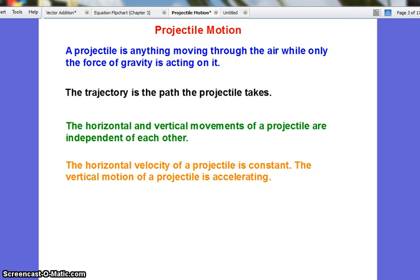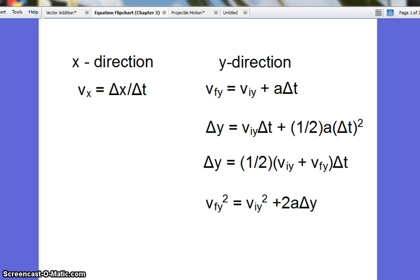What does that mean in terms of our equations? If the x-direction is constant velocity, we only have one equation: vₓ = Δx/Δt. If the y-direction is accelerating, we have four equations with acceleration, which we learned with freefall.